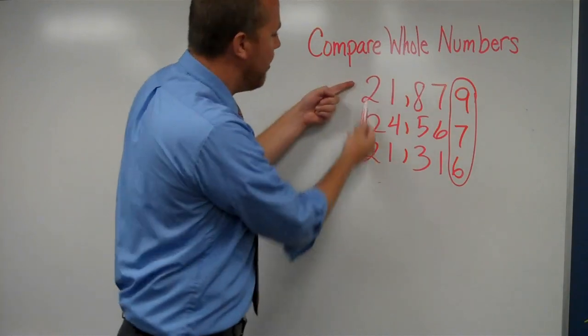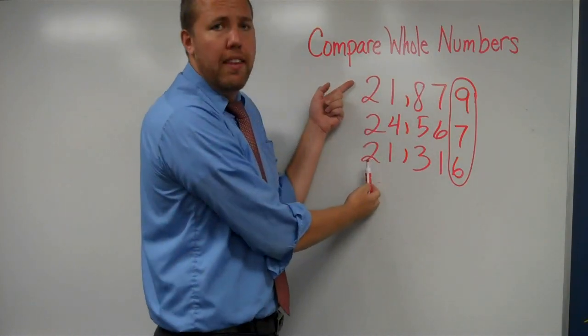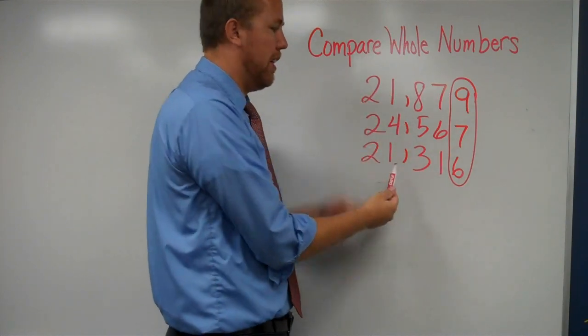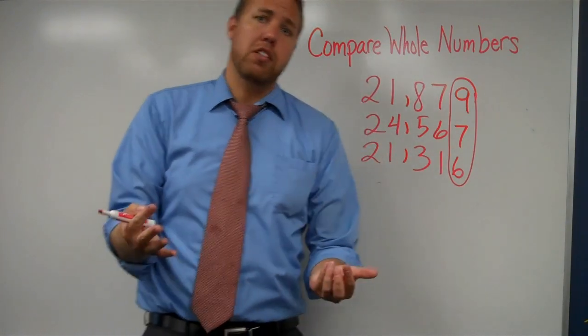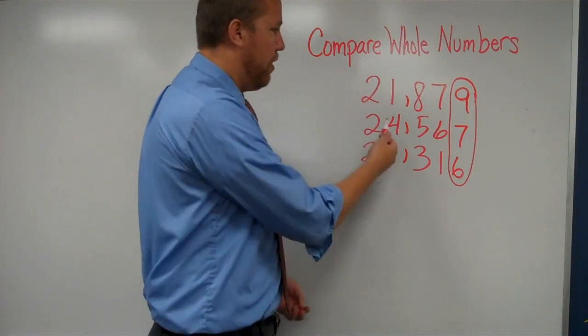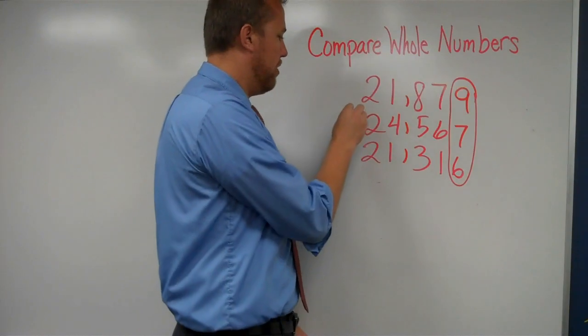Then we just come over. Oh, they all have 20,000. 20,000 what? 21,000, 4,000, or 1,000. We automatically know that 4,000 is going to be bigger than 1,000 in everybody's world. So if we were to order them completely, we'd know that that one's the biggest.